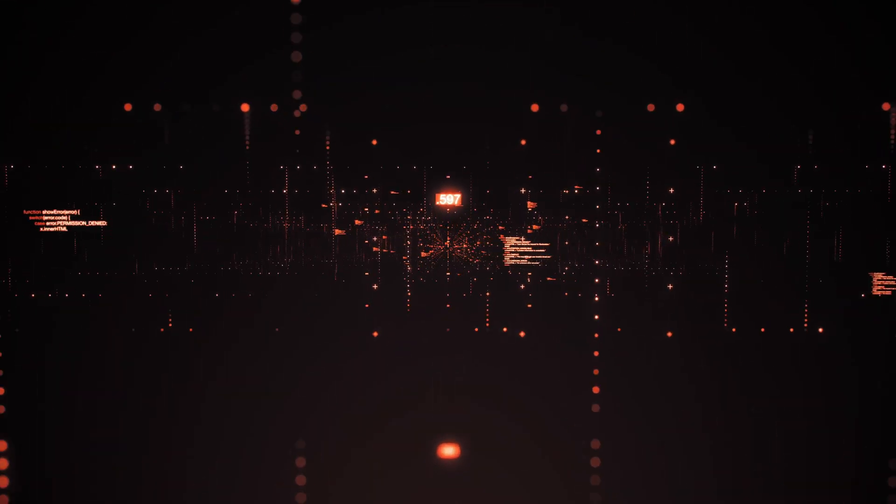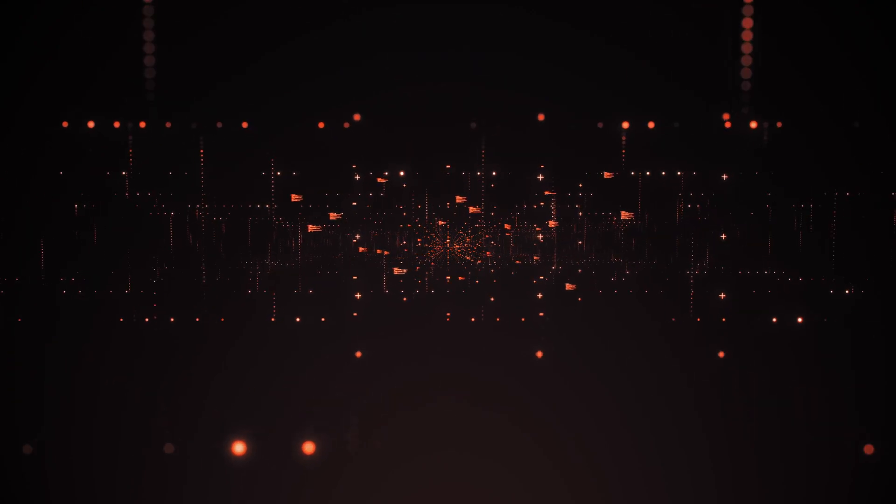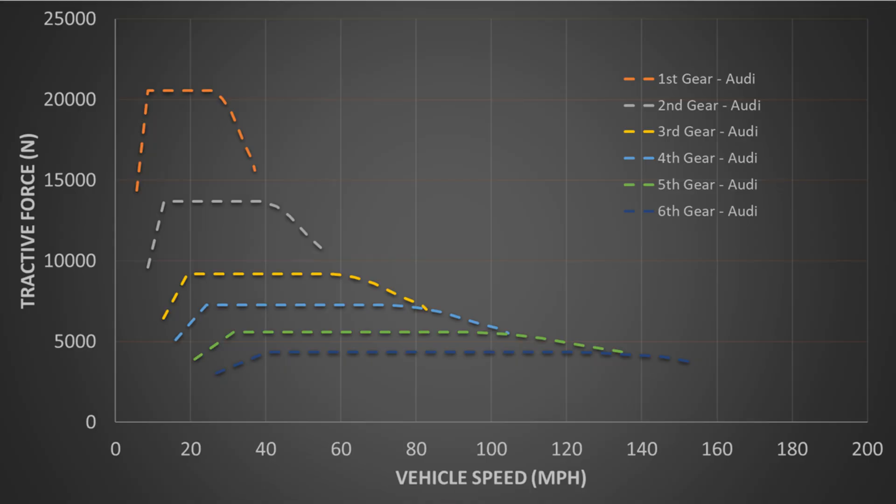Now, let's calculate the tractive force curve for the Audi. Using the engine torque curve, gear ratios, and tire sizes, you can see the peak in first gear is a little bit more than 20,000 newtons or 4,600 pound force. Then it follows the peak power curve at 354 horsepower all the way out to the V-Max of 155 miles an hour.